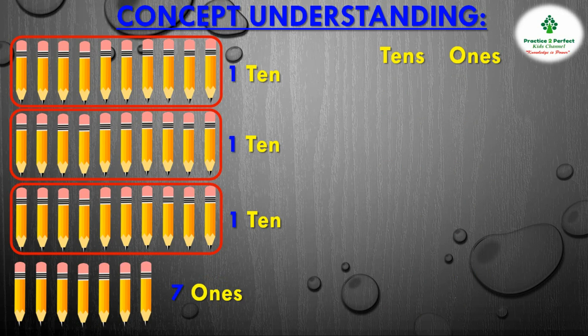So we write 3 in the 10s place and 7 in the 1s place. The right place is the 1s place, and when you go one place to the left of it, that is the 10s place.